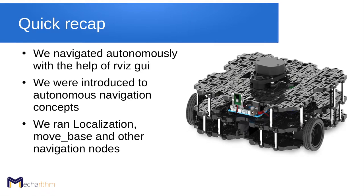Rviz can let you see what you can't usually see in reality — it's like the hidden layer, like the sensor observations, the maps, paths, and stuff like that. We were also introduced to autonomous navigation concepts like path planning, control, simultaneous localization and mapping, and localization and mapping as individual processes. We ran localization, move base, and other navigation nodes related to the navigation stack of the TurtleBot3.